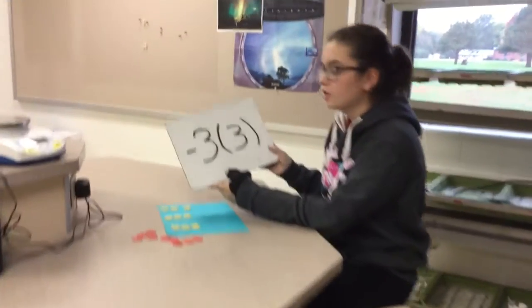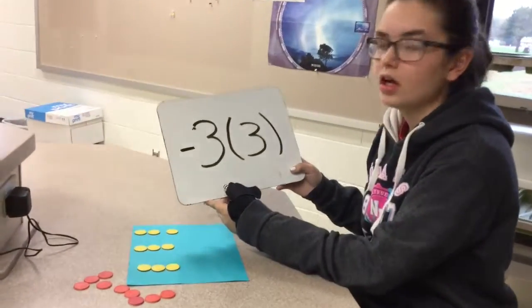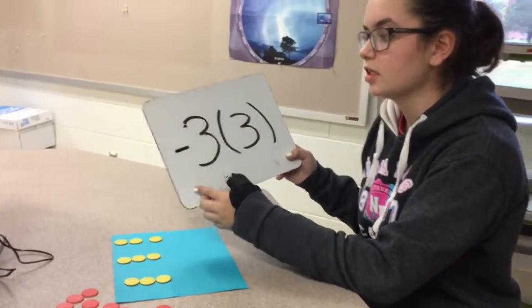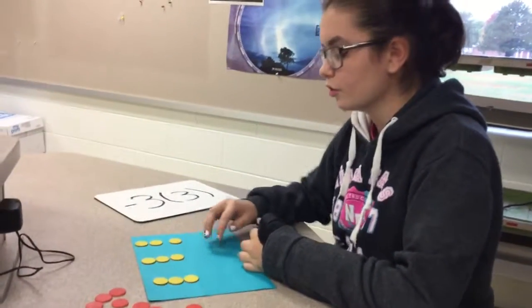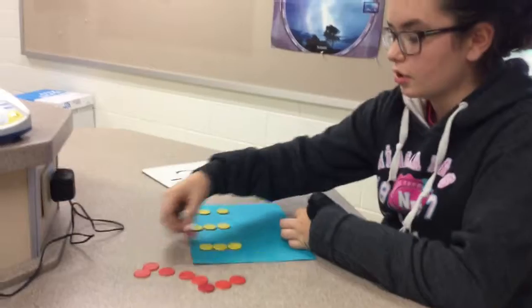Our last problem is multiplication. We're doing negative 3 times 3. So another way you can say this is take away 3 groups of 3. So first, we have our 3 groups of 3, and then we add our pairs of 0.